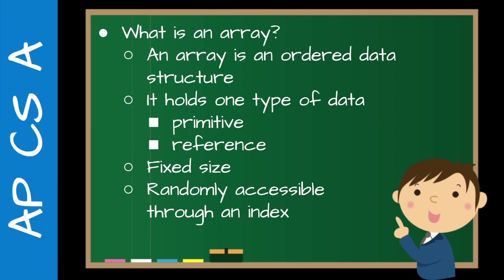Arrays are fixed in size. So once you've created the size of an array — say this array has 10 elements — it always has 10 elements. You can't add elements and you can't remove elements. Now, if it's a reference type you can set it to null, but there are still 10 places in memory reserved for that array. What is nice is it is randomly accessible through an index, so whether you want to access element 1 or element 10 million, you can access it just as quickly. That's one of the strengths of arrays.